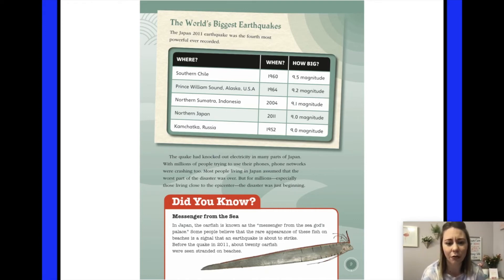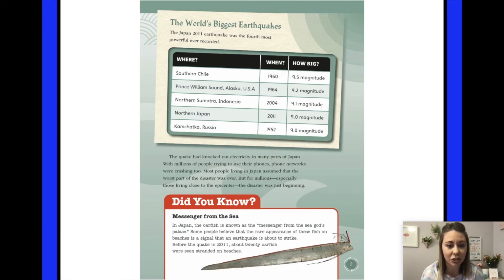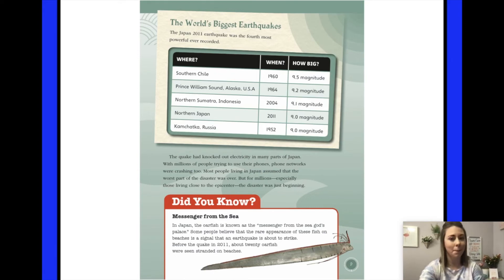Did you know? Messenger from the Sea. In Japan, the oarfish is known as the Messenger from the Sea God's Palace. Some people believe that the rare appearance of these fish on beaches is a signal that an earthquake is about to strike. Before the quake in 2011, about 20 oarfish were seen stranded on beaches. That could be an interesting sign.